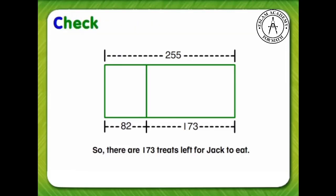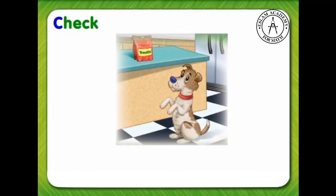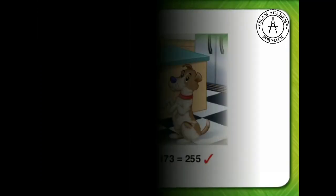Finally, let's check our answer. Is our answer reasonable? How do we know? We can use addition to check. Since 82 plus 173 equals 255, our answer is reasonable.